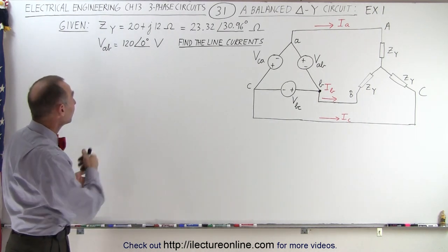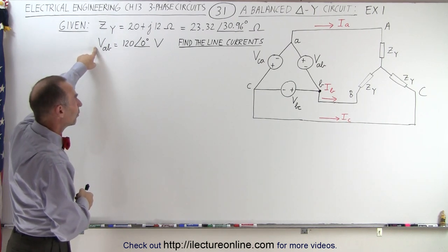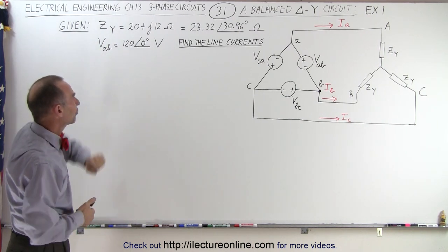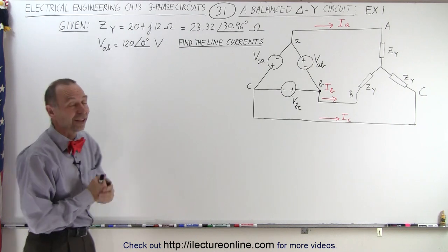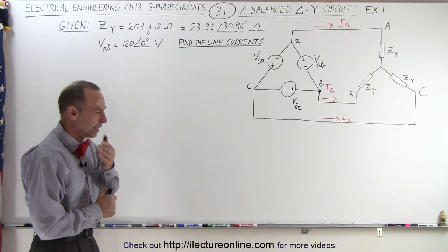We are given the impedance of the load and we're given the voltage from A to B, and we're asked to find the line currents Ia, Ib, and Ic. How do we do that?